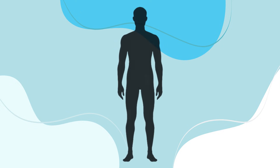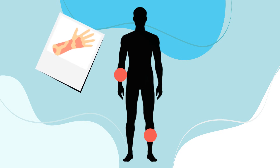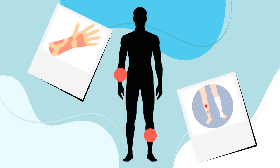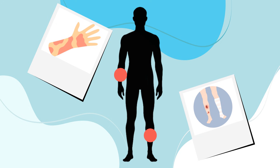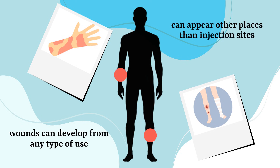Xylozine has also been associated with the development of wounds, most typically on the forearms and lower legs, though they can occur in other places too. The wounds can be significant, cover large areas of skin, and look a bit like severe burns. Wounds can develop from any type of xylozine use — injecting, smoking, or snorting — and they do not necessarily develop in the same places where people are injecting drugs.